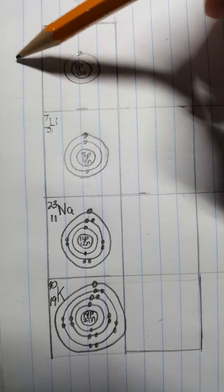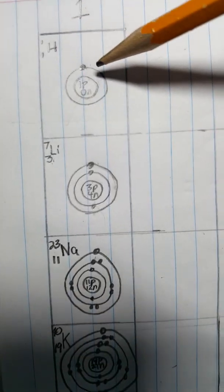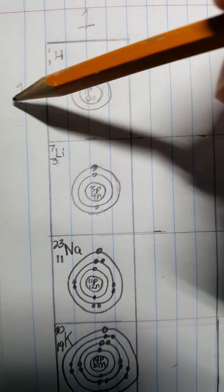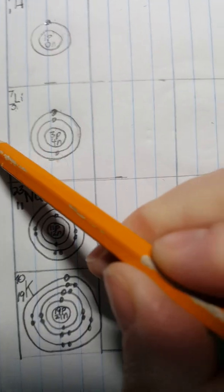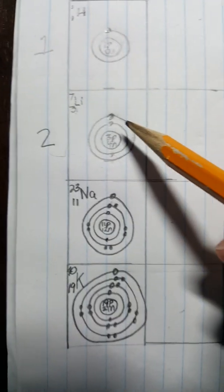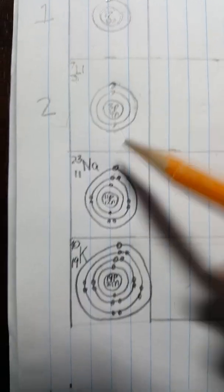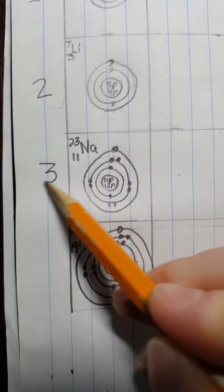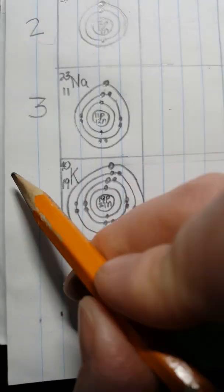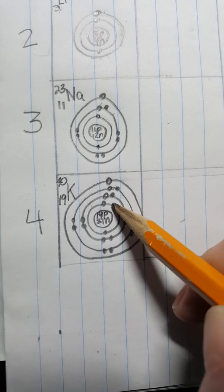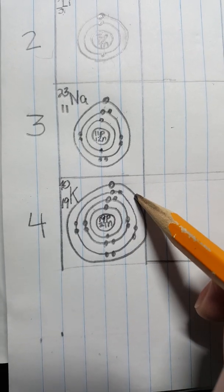And you'll also notice that the period matches the number of energy levels. This is period one. One energy level. Period two has two energy levels. Look at this. Period three. Three energy levels. One, two, three. Period four. Four energy levels. One, two, three, four.